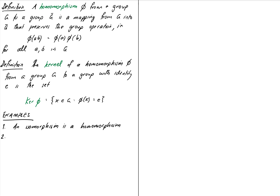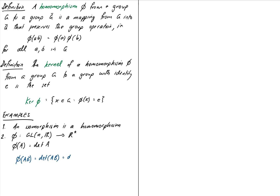Example number two: let's consider phi mapping n-by-n invertible matrices with real entries — GL(n, R) — onto the group of non-zero real numbers under multiplication, defined by phi of a matrix A equals the determinant of A. Is this a homomorphism? All we need to check is that it preserves the group operation. Phi of AB equals det(AB), and we know the determinant of a product equals the product of the determinants, so that gives det(A) det(B) which equals phi of A times phi of B. So yes, that's a homomorphism.